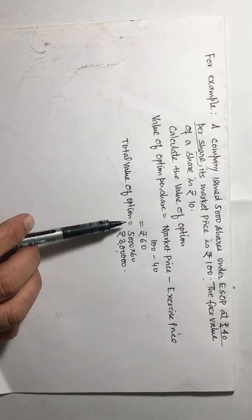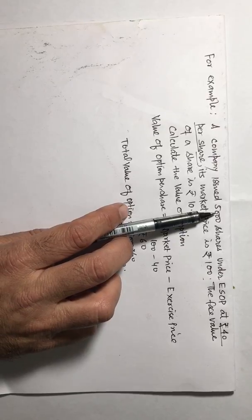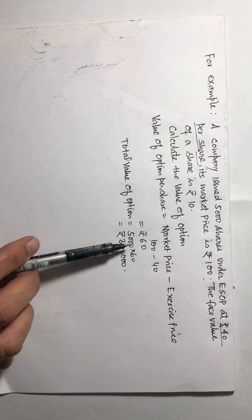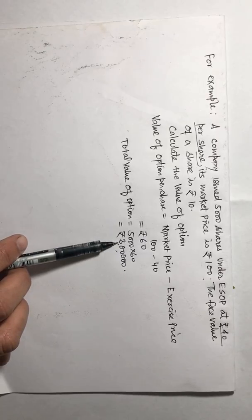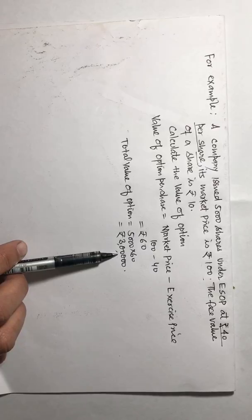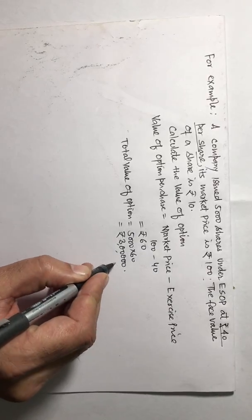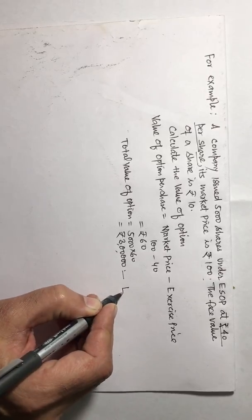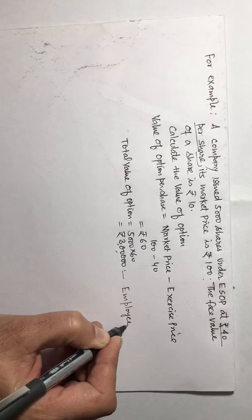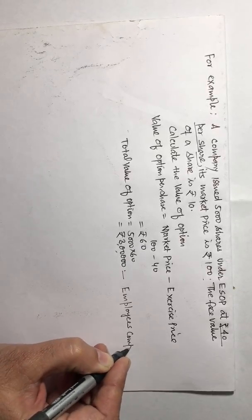Total value of option means how many shares has the company offered under ESOP? 5000. And what is the value of option? 60. So total value of option is Rs. 300,000. And these Rs. 300,000 total value of option, do remember, this is shown in the journal entry in the name of employee compensation expense.